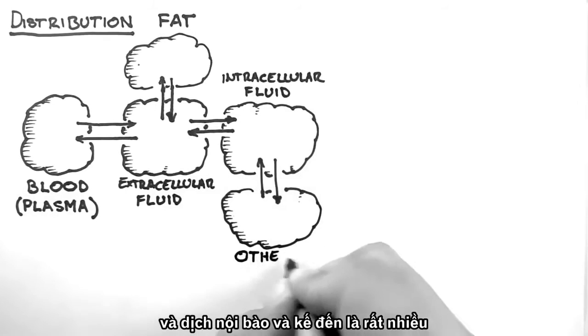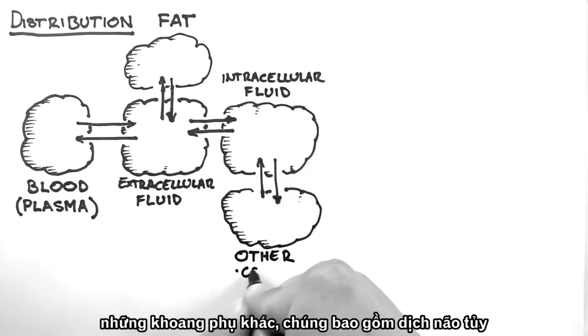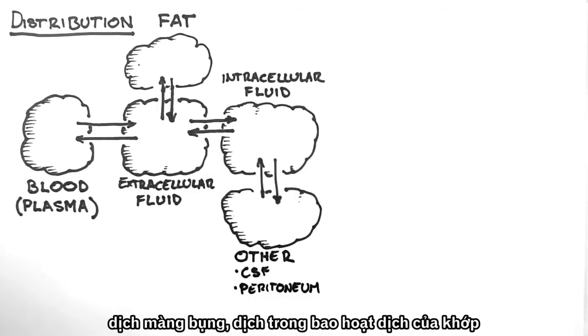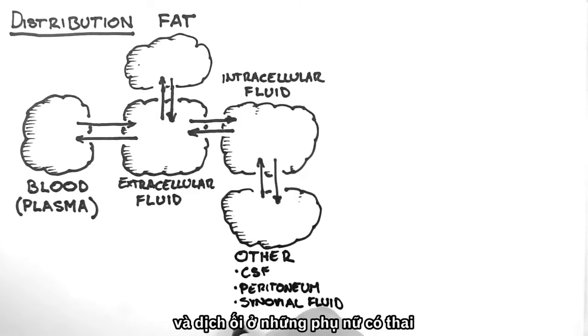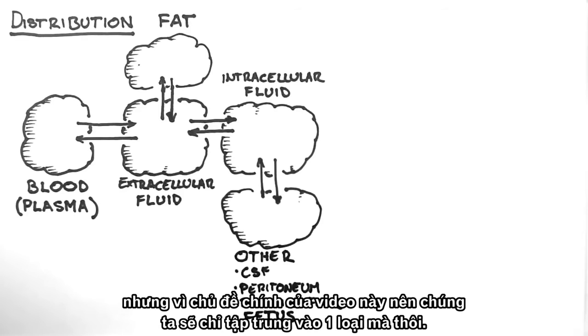Then there are numerous other minor compartments. These include the cerebral spinal fluid, the peritoneum, synovial fluid in joints, and the fetus in pregnancy. There are numerous others, but for the purposes of this tutorial, we'll consider these as one single compartment.